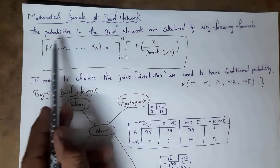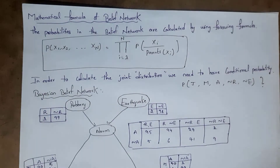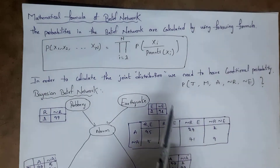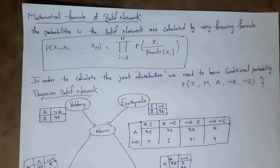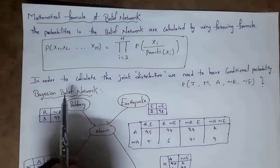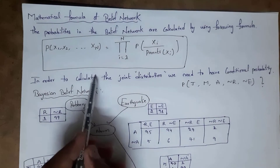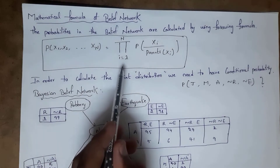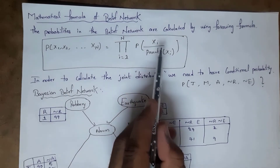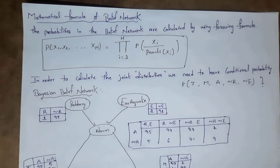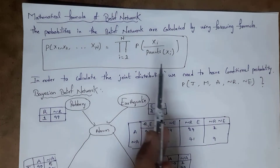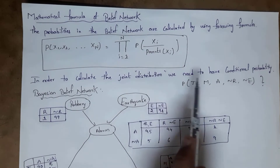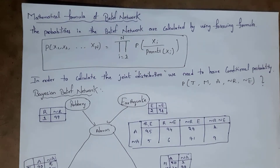This is the mathematical formula of a Bayesian Belief Network. The meaning of this formula is: the probability of an attribute equals the probability of that particular attribute given its parent attribute. We use this formula to calculate joint distribution.